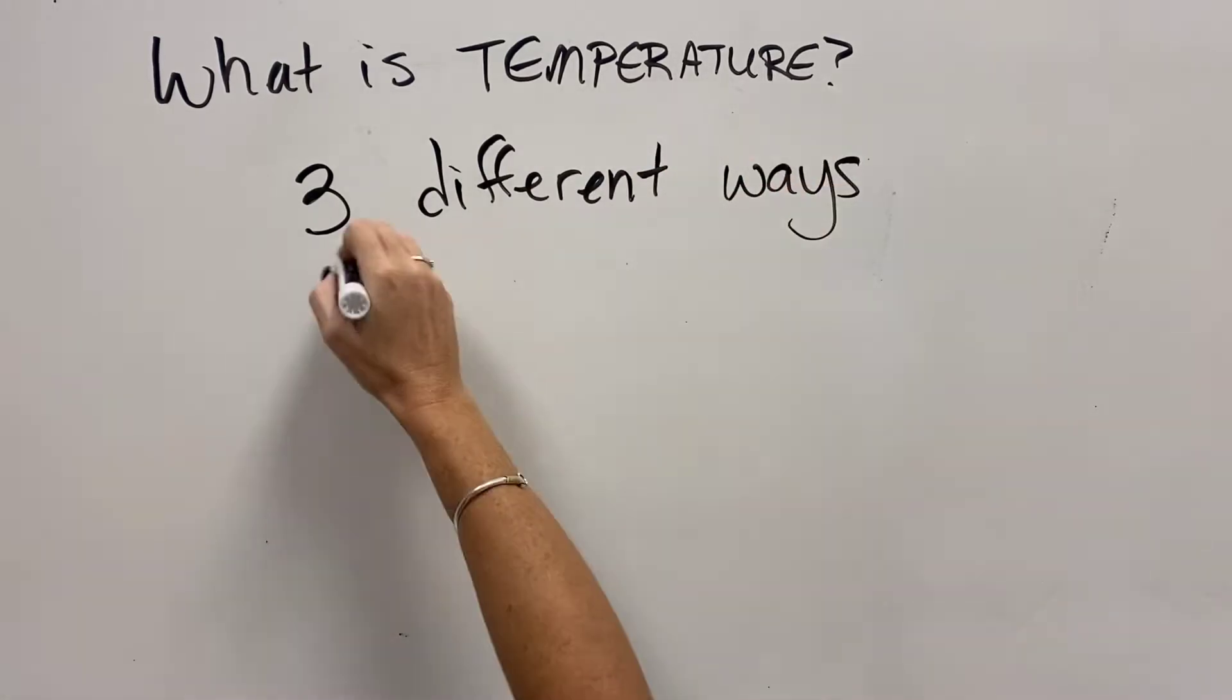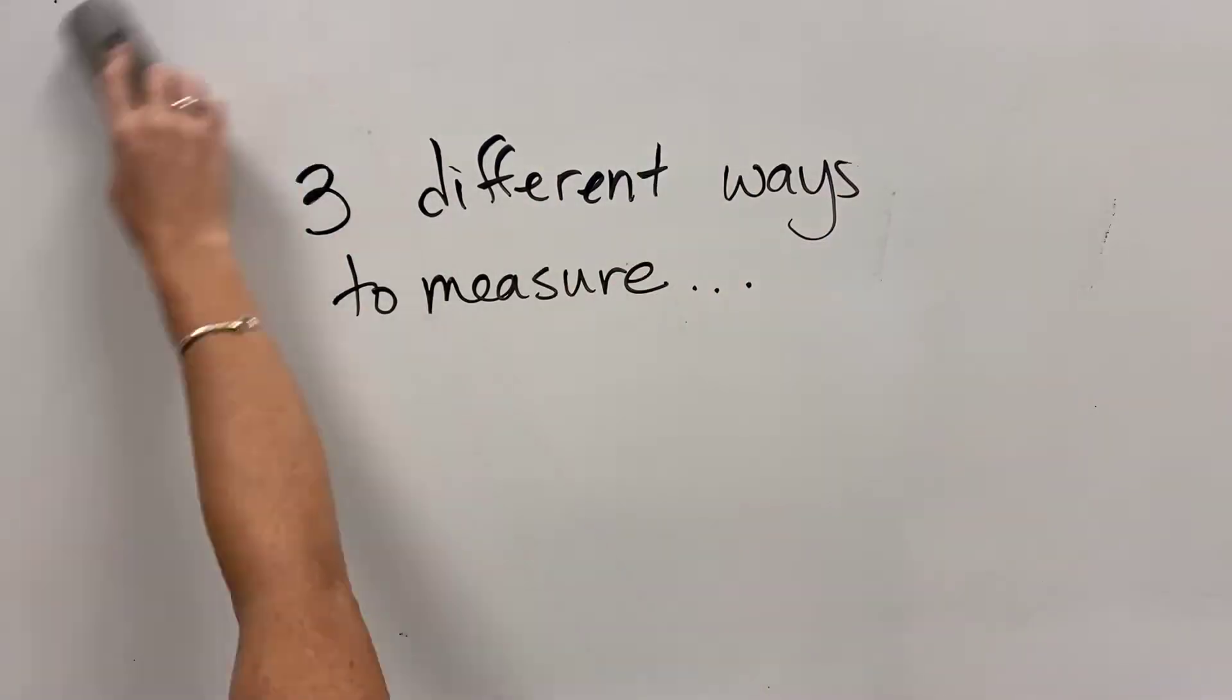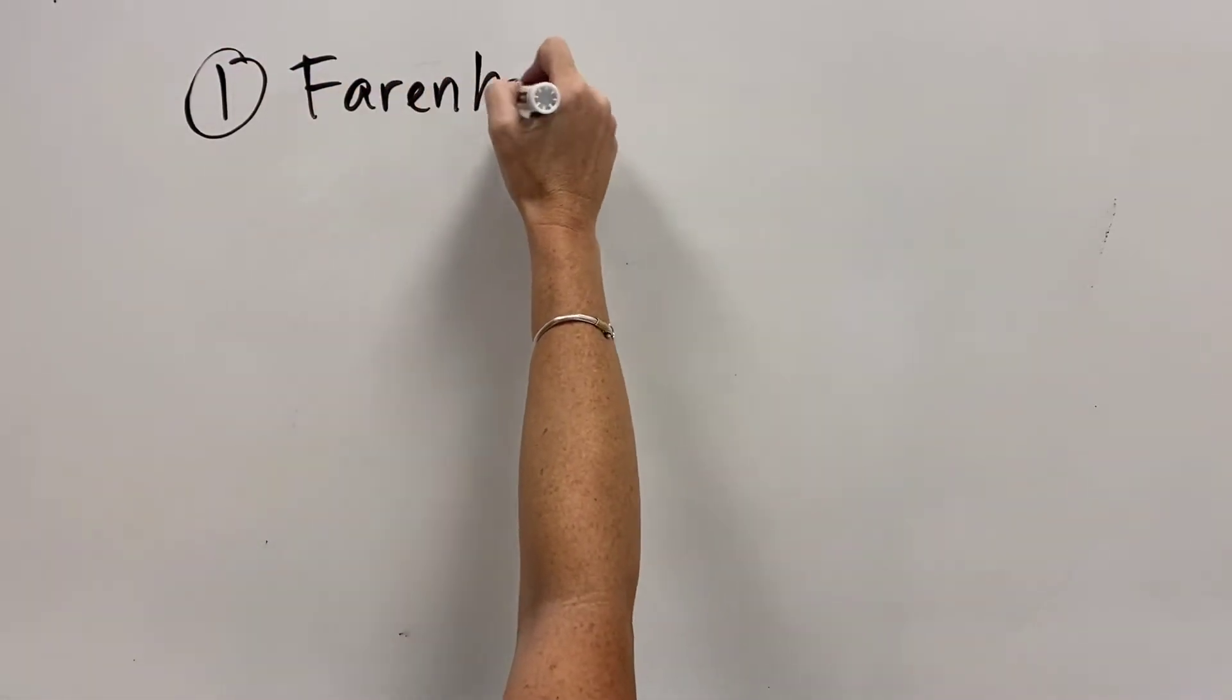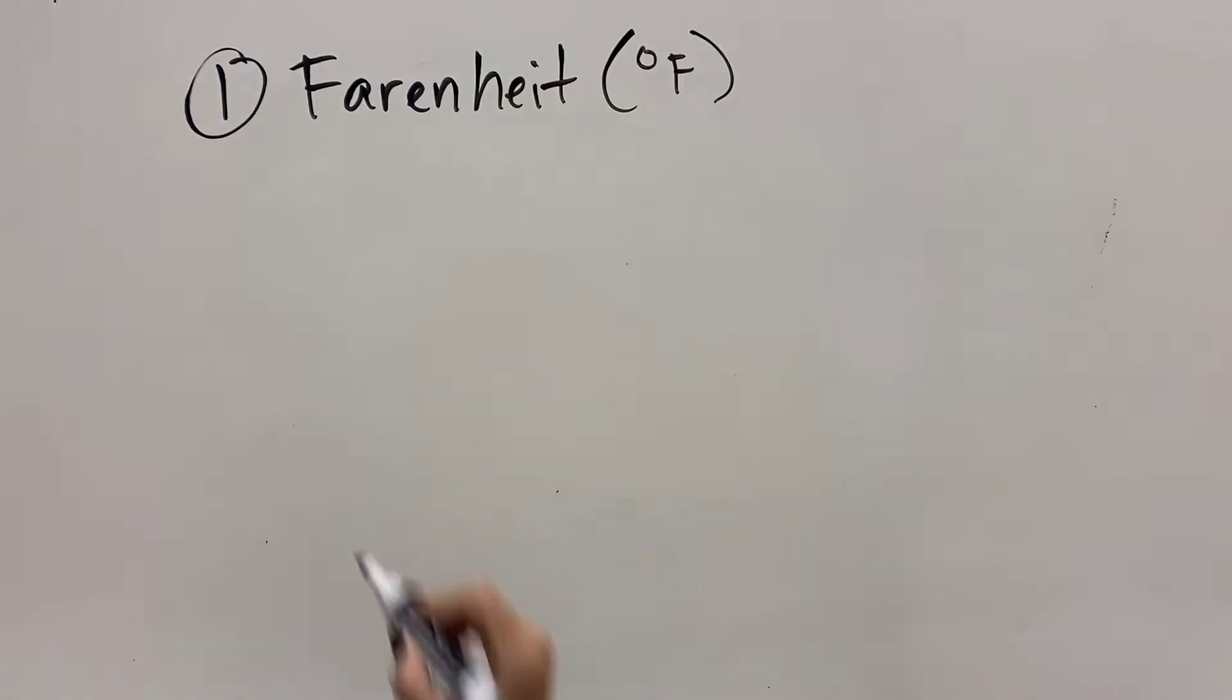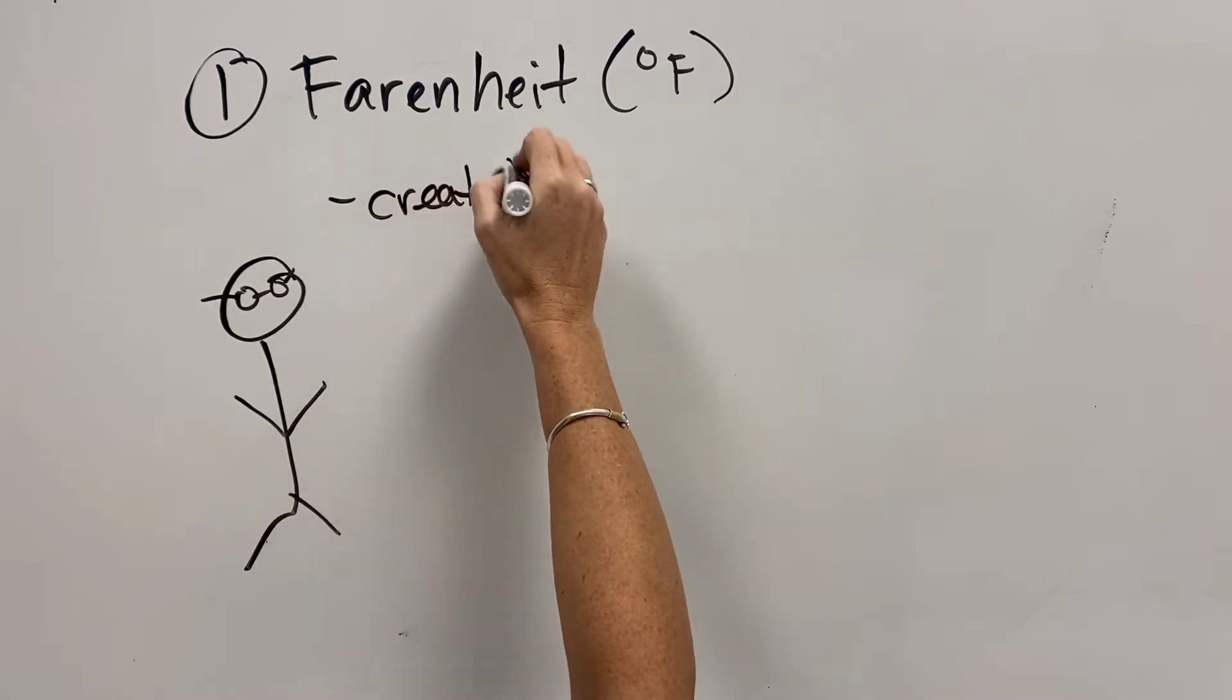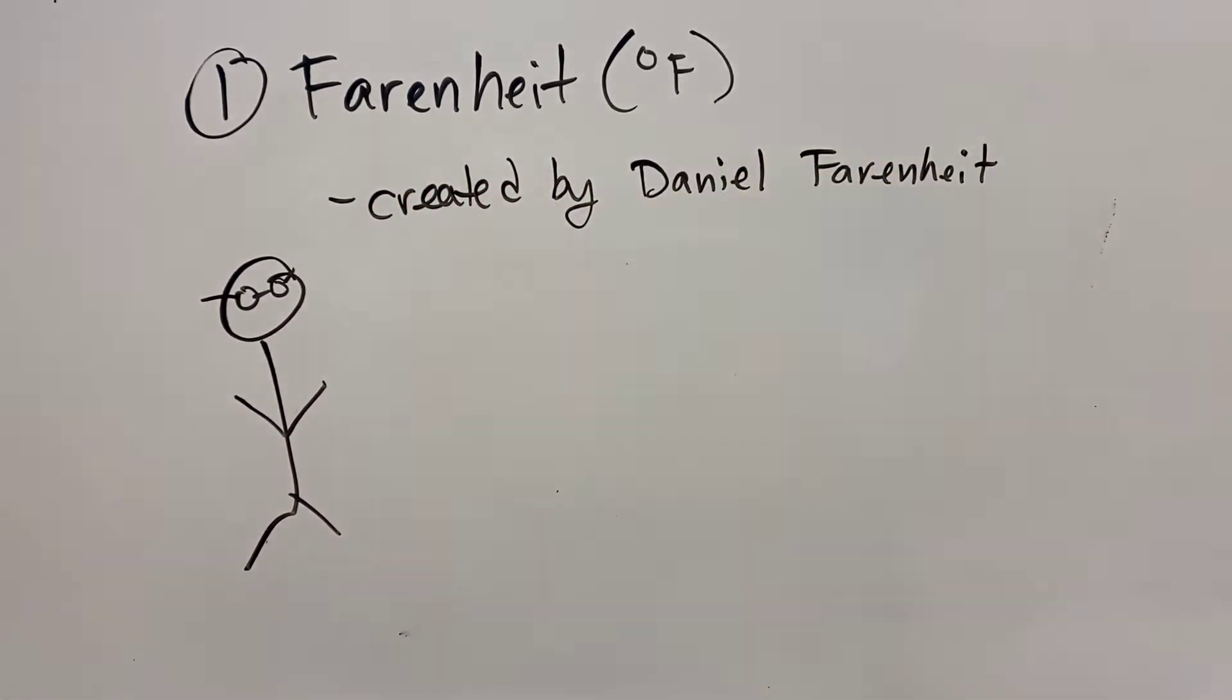So there are three different systems that have been created and widely used, and we're going to look at some of the pros and cons of those. So the first widely used system to measure temperature was the Fahrenheit system, degrees Fahrenheit. We still use that in the United States. Most of the rest of the world has gone away with it. There are some reasons why.